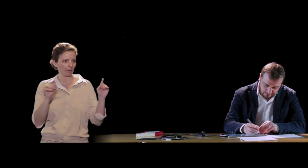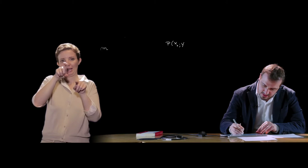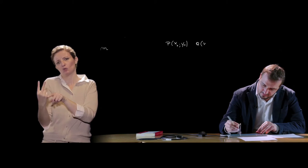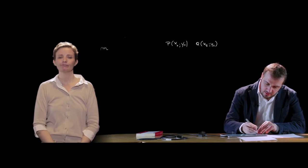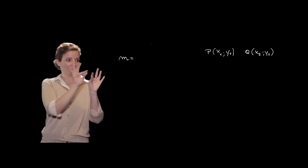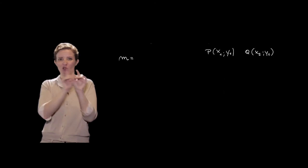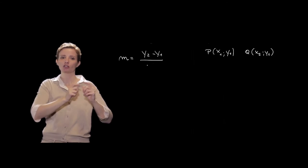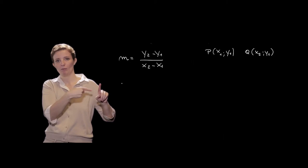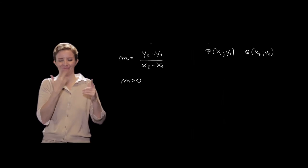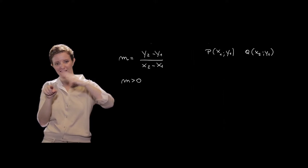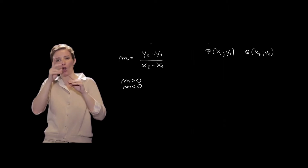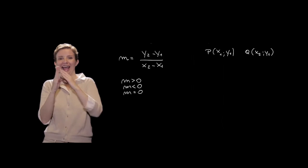Tra le formule più importanti che caratterizzano la retta nel piano cartesiano, cominciamo con il coefficiente angolare di una retta passante per due punti. Dati P di coordinate (x1, y1) e Q di coordinate (x2, y2), il coefficiente angolare m è il rapporto fra la differenza delle ordinate e la corrispondente differenza delle ascisse. Se m > 0 l'angolo con l'asse x è acuto; se m < 0 è ottuso; se m = 0 la retta è parallela all'asse delle x.